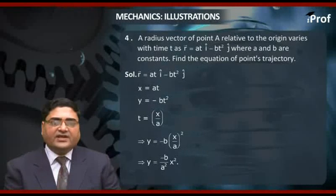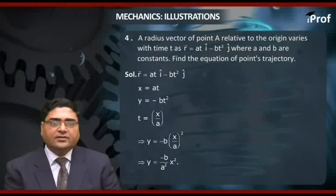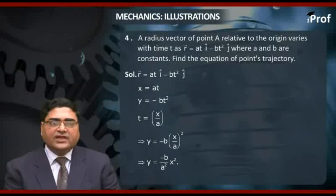Since r vector equal to at i cap minus bt square j cap, so x equal to at and y equal to minus bt square. Therefore t equal to x upon a.